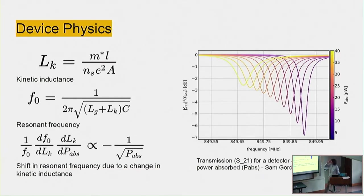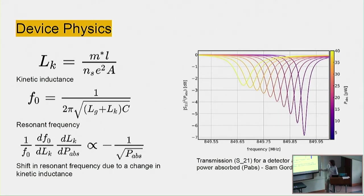Kinetic inductance is a serious effect at low temperatures in a superconductor. The inductance is inversely proportional to the number of Cooper pairs. As you shine light on the detector, you're changing the number of Cooper pairs - you're breaking them apart, creating quasi-particles - and that changes the inductance and the resonant frequency, which is the sum of the geometric inductance and the kinetic inductance. You can find how this inductance changes with respect to absorbed power, and here's a simulation of the shift in resonant frequency for a particular power absorbed.